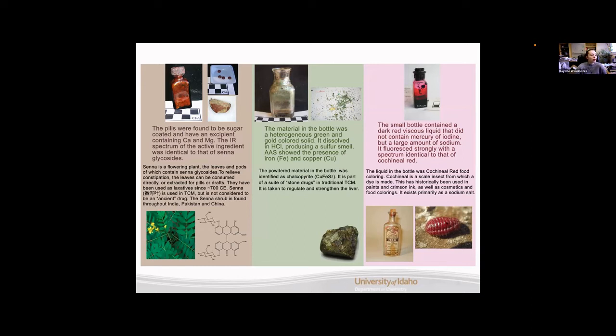Our third artifact from the Eureka site is this small bottle, which I find this artifact very interesting, a small bottle containing a dark red viscous liquid that did not contain mercury or iodine, but rather it had a very large amount of sodium. It fluoresced strongly with a spectrum identical to that of cochineal red. So cochineal red is a food coloring that comes from these very small insects called cochineals. They are crushed up and they can be used in paints, crimson inks, cosmetics externally, and as well as food, which would obviously be used internally. It is this primarily as a sodium salt. And here you can see a historical picture of a red food coloring bottle made from this cochineal red that you can see in our artifact.